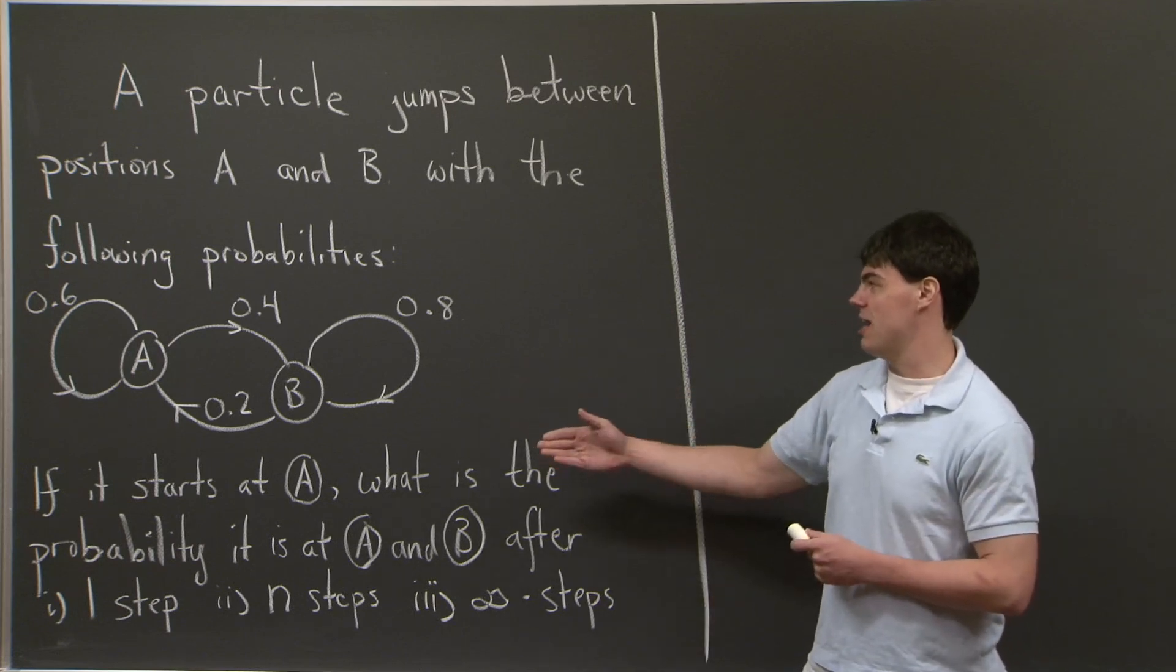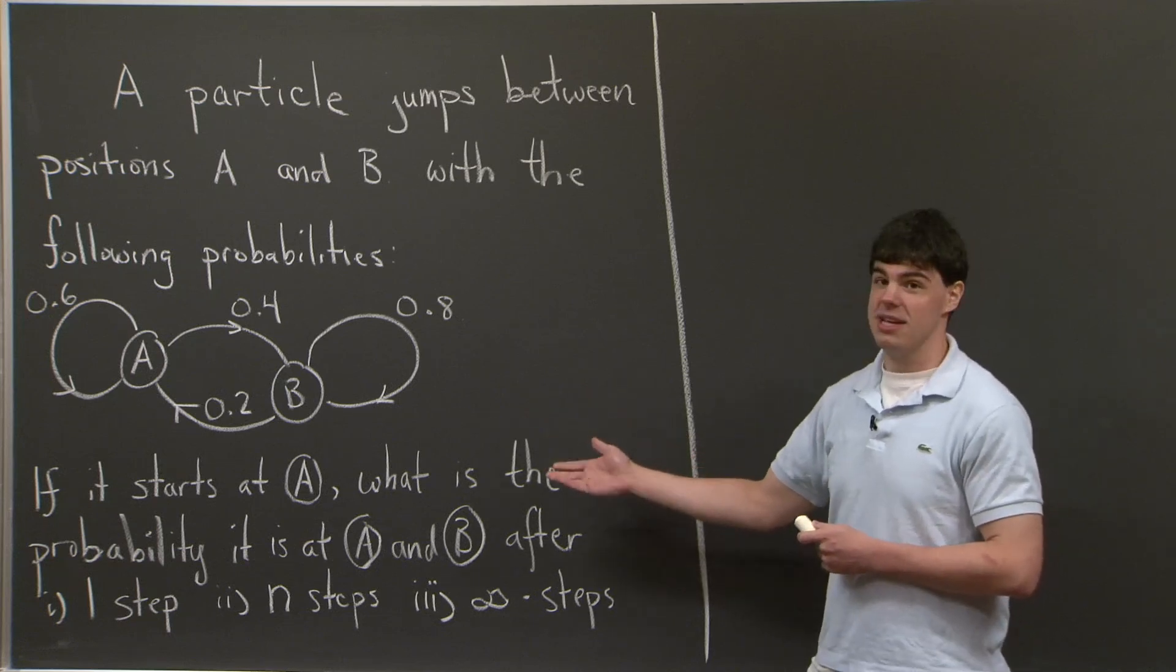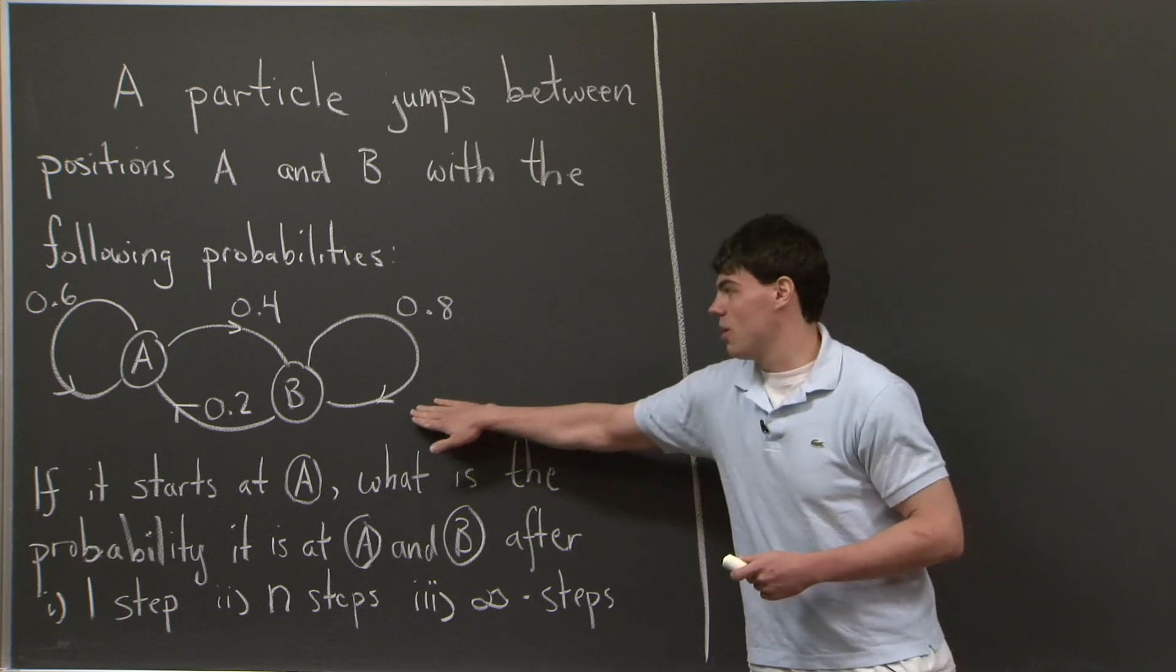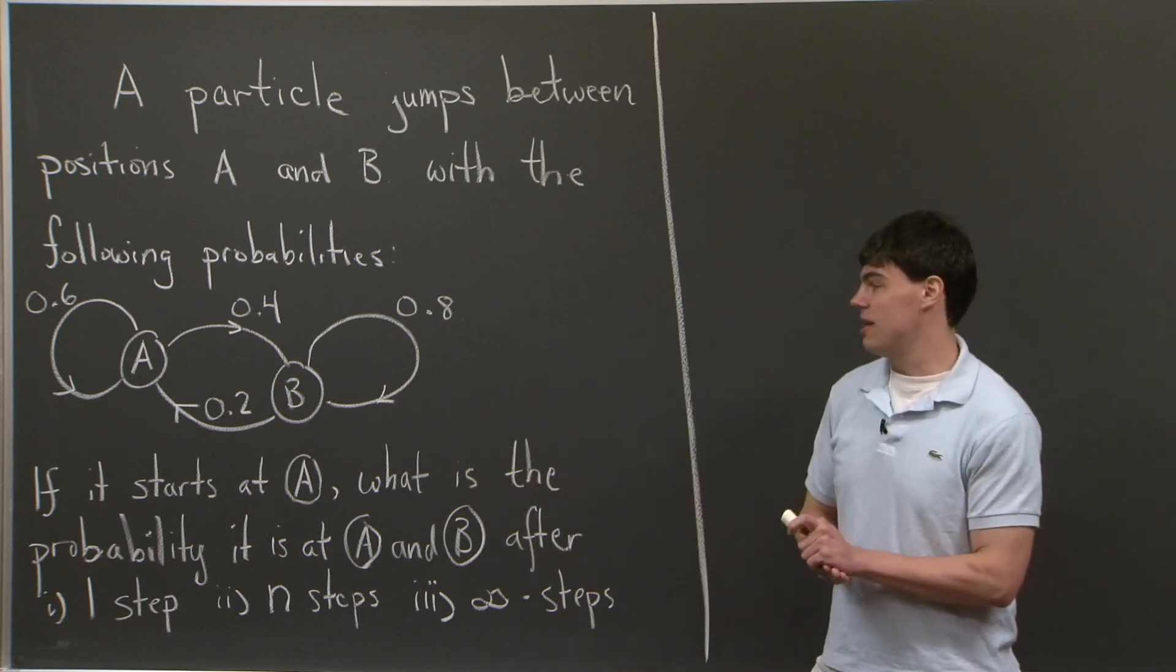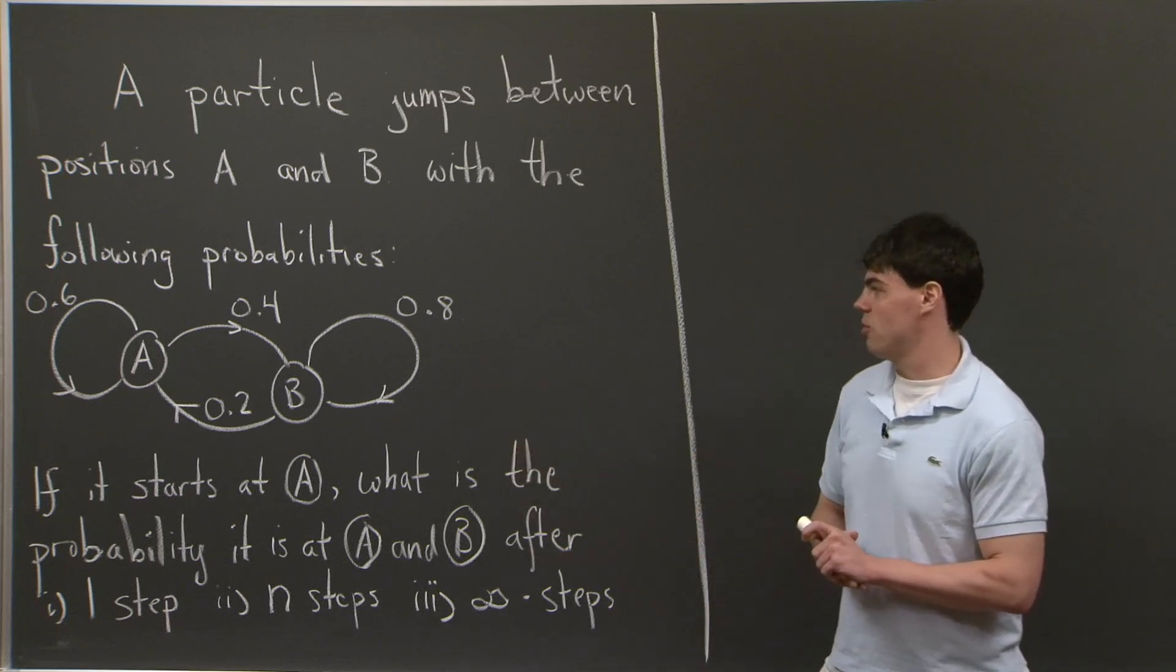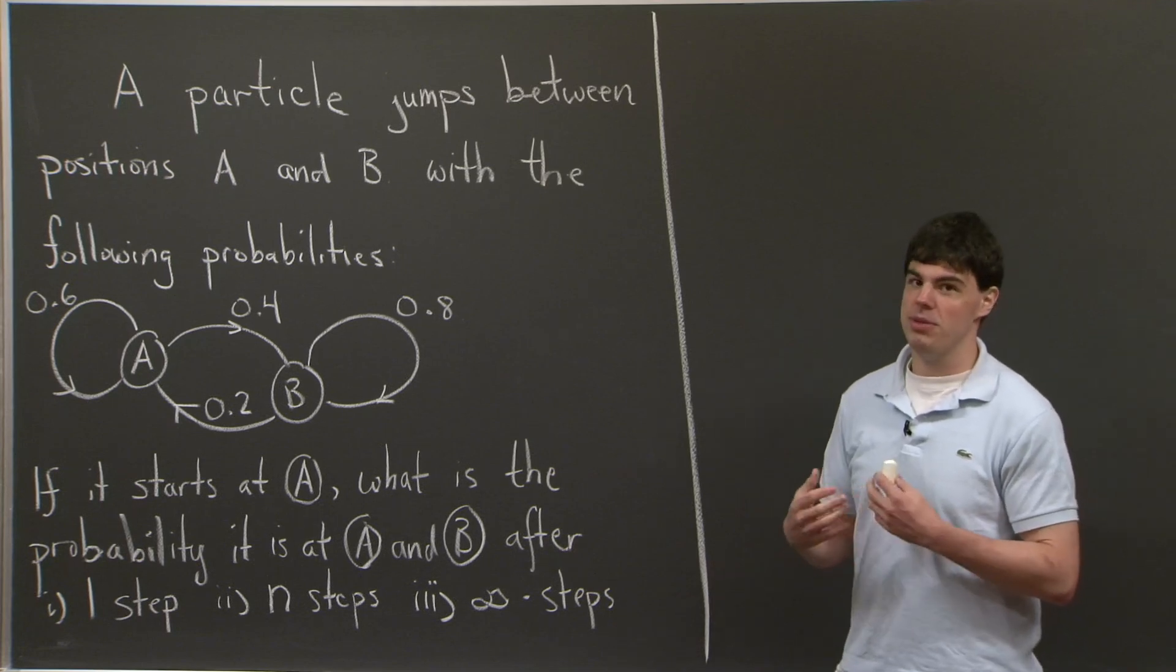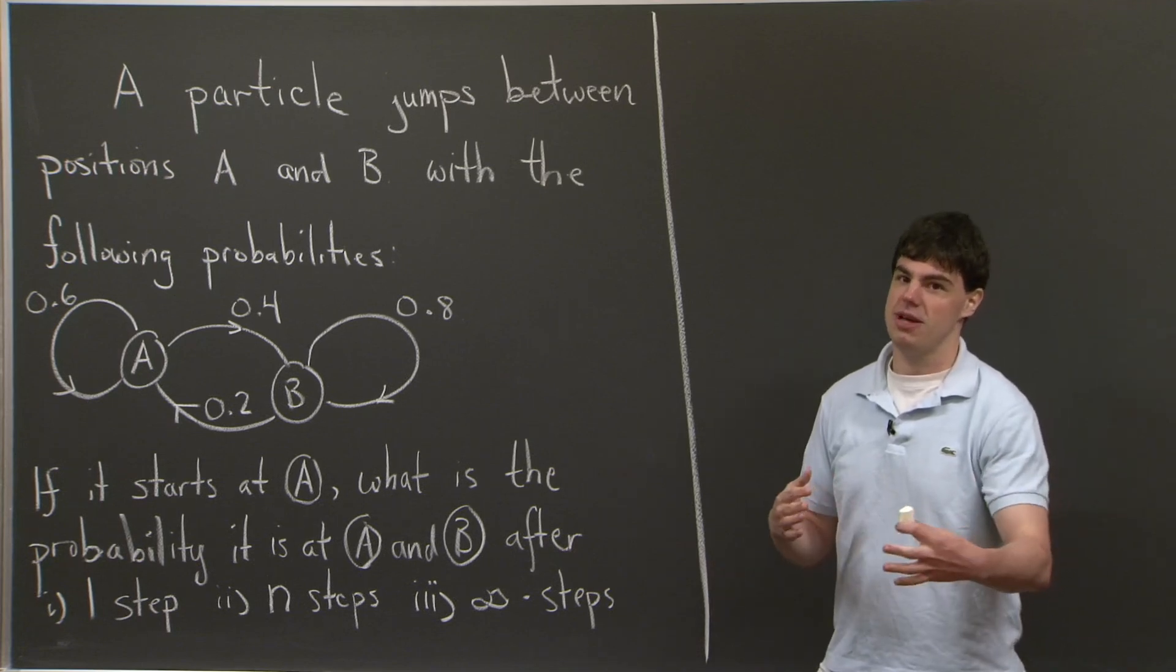If it starts at A and jumps to B with probability 0.4, or starts at A and stays at A with probability 0.6, or if it starts at B, then it goes to A with probability 0.2, or stays at B with probability 0.8, we'd like to know the evolution of the probability of this particle over a long period of time.